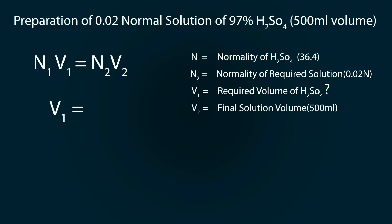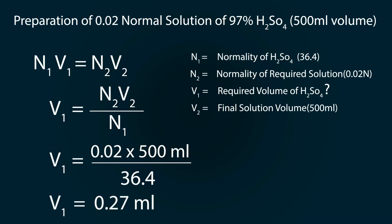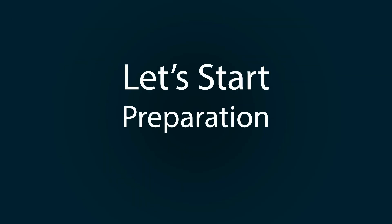V1 equals N2V2 whole divided by N1. Put the values: 0.02 multiplied by 500 divided by 36.4, and you will get the volume as 0.27 milliliters. Now let's start our preparation.